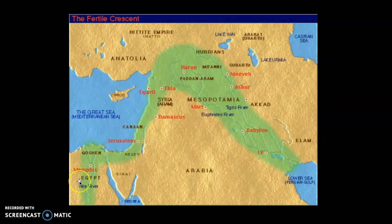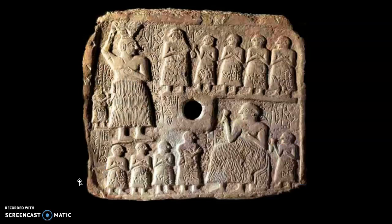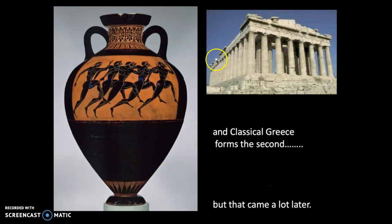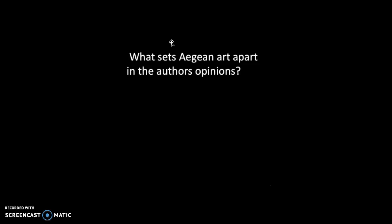The classical Greeks, which are the culmination of Greek ancient history, and these gorgeous pots that you see didn't happen until much later, just after this story. So what we want to learn about is how the Bronze Age came and went before that part of classical Greece.